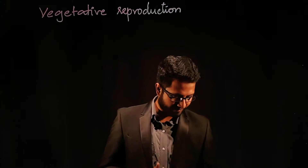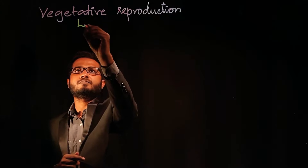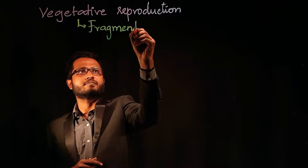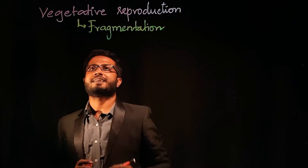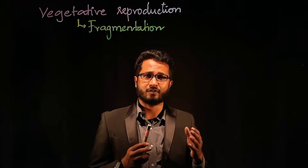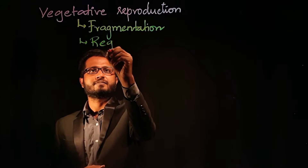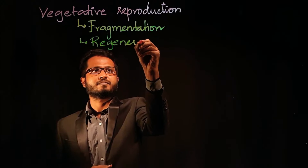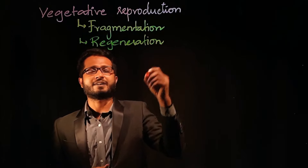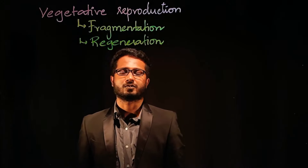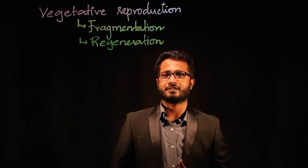There are two major steps involved in this. The first step where separation is happening is known as fragmentation, and the second step where a new part is growing is known as regeneration. Fragmentation and regeneration — these are the two steps involved in the topic known as vegetative reproduction.